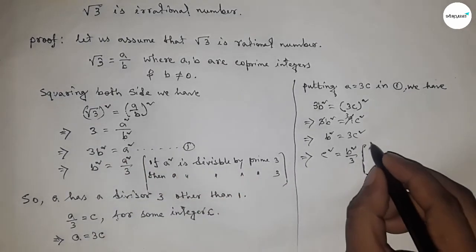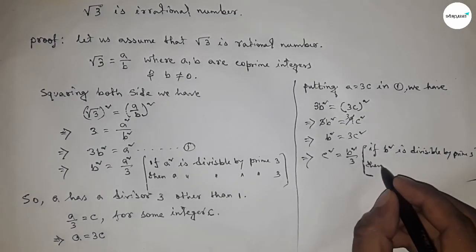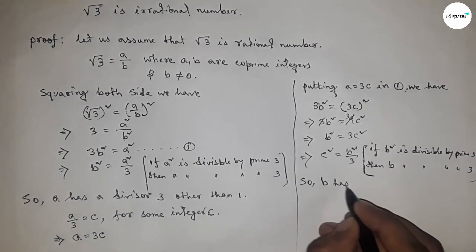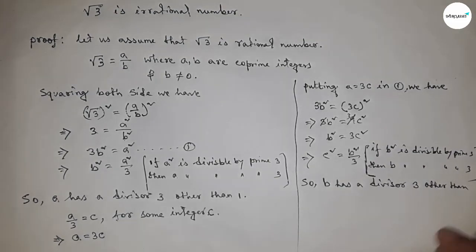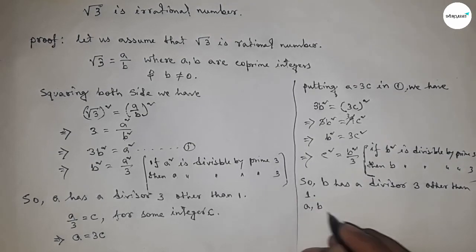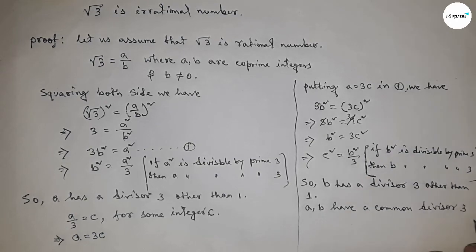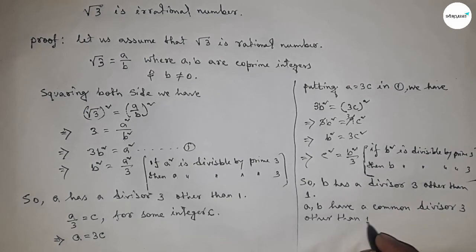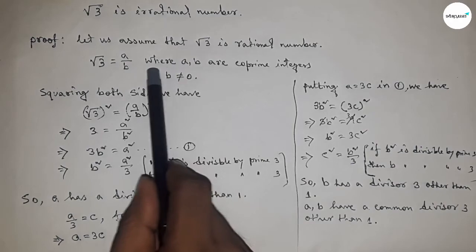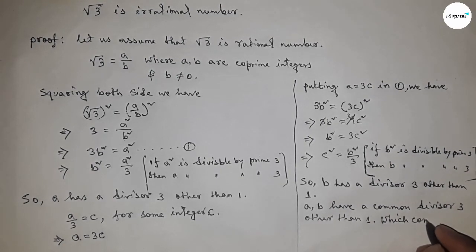This is similar to before, so we apply the same theorem: if b squared is divisible by prime 3, then b is also divisible by prime 3. So b has a divisor 3 other than 1. This means both a and b have another common divisor 3 other than 1, but we assumed a and b have only one common divisor, which contradicts our assumption.